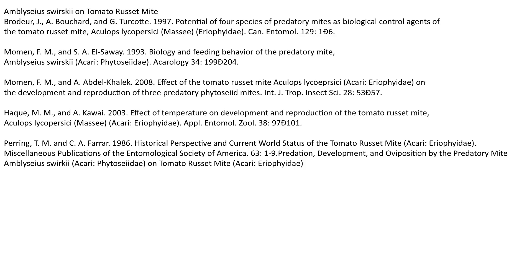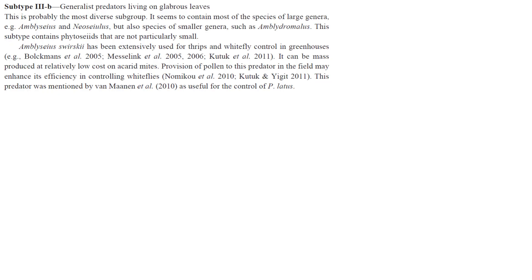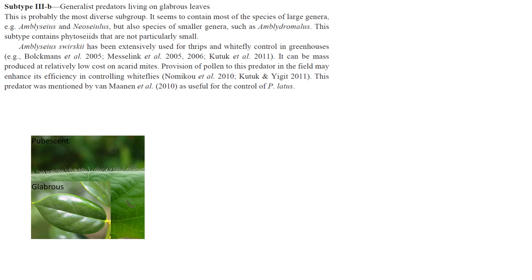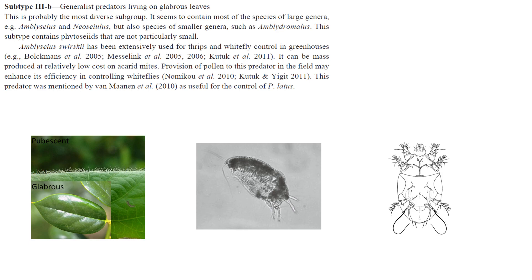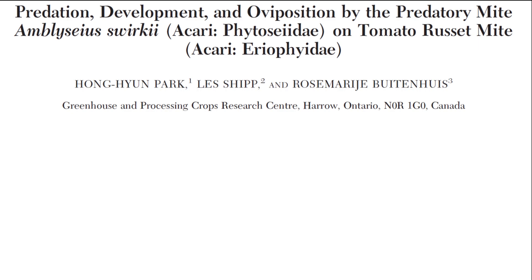Amblyseus swirskii is perhaps one of the most popular predatory mite species studied for russet mite efficacy. It is a type 3b mite, meaning it is a generalist that is adapted to surfaces that are not very dense with trichomes. It is proven to be highly effective against another microscopic mite species, the broad mites. The russet mite it is most deployed against is Aculops lycopersaci, the tomato russet mite, a serious pest of tomatoes and other solanaceous crops. In a 2010 report published in the Journal of Economic Entomology, Aculops lycopersaci was attacked at all stages of life by the type 3b predatory mite Amblyseus swirskii, with a type 2 functional response at the prey densities tested.